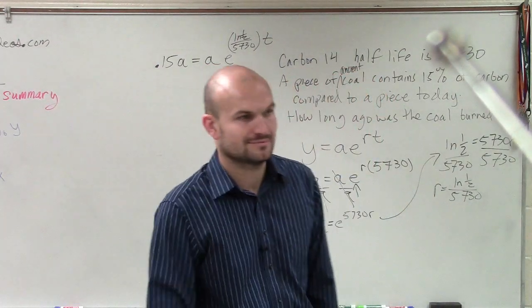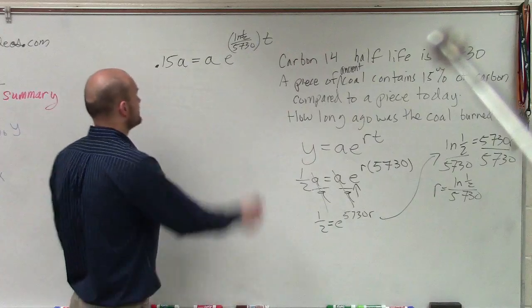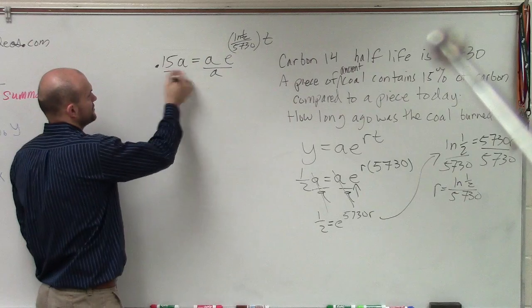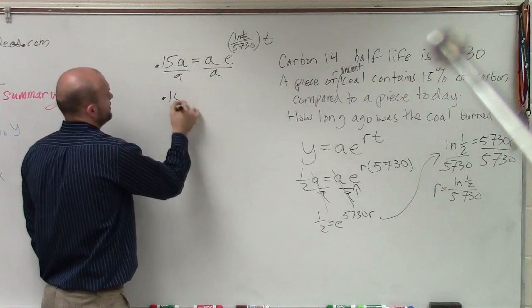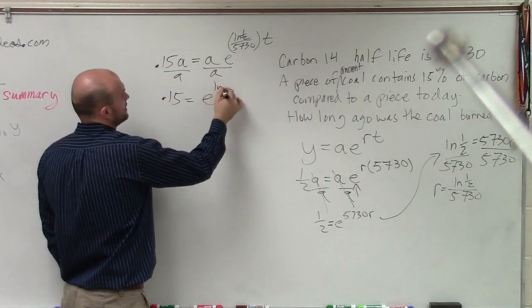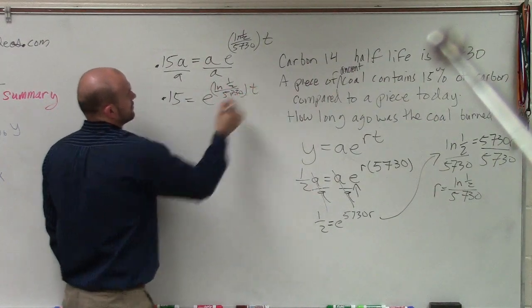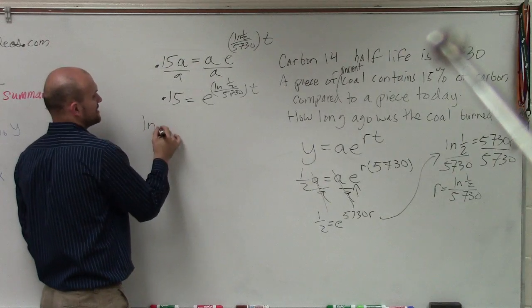So again, we divide by A. Are you writing this? I don't know if that's an issue. OK. 0.15 equals E to the LN of 1 half. Then I take the LN of both sides.